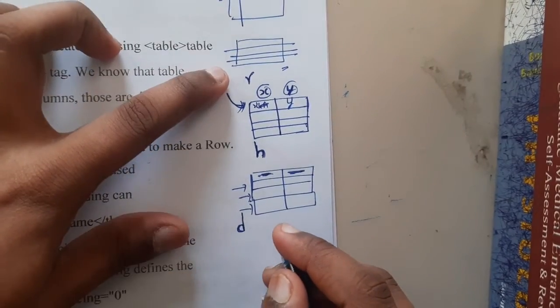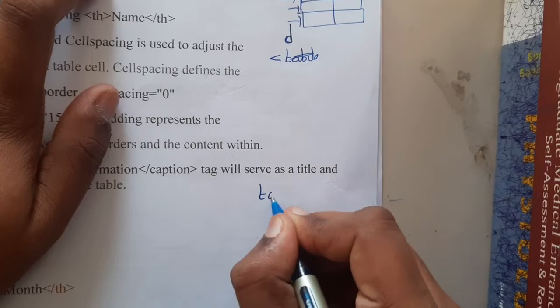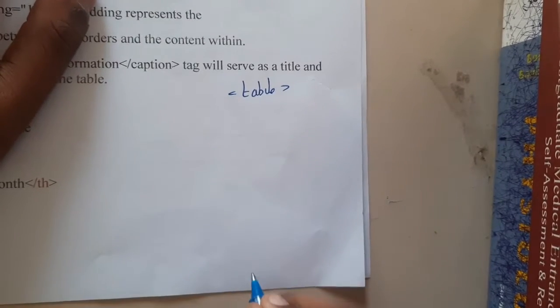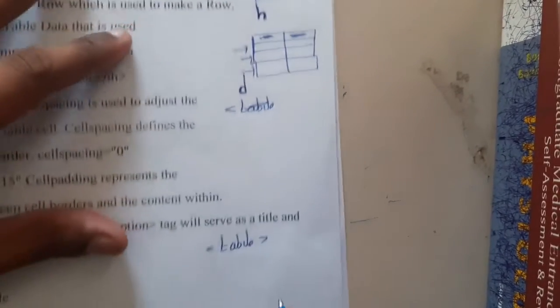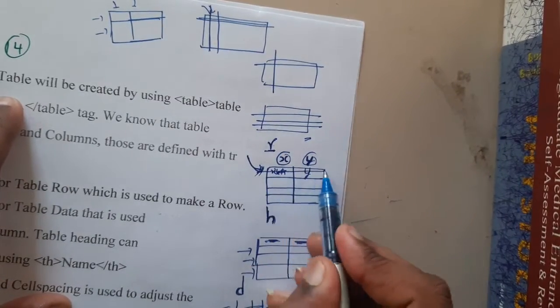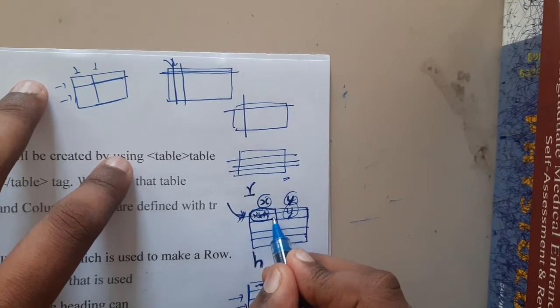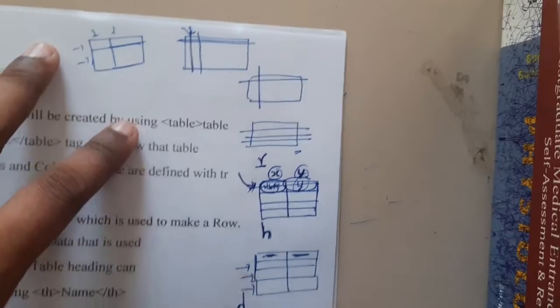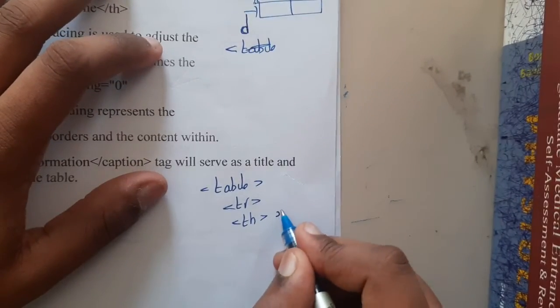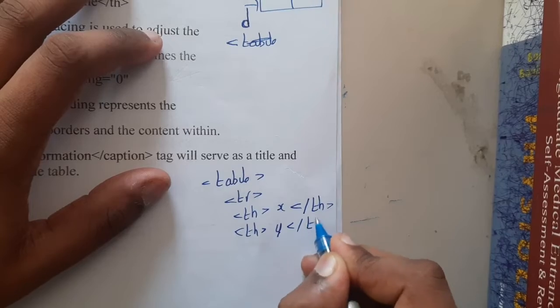So basically, first we need to create a table. Let me write it down: we open the table tag and after some steps we close the table. After that, we start a particular row. Inside the first row we might have headings. So I start the first heading — that is the first column — and then the second heading. According to my assumption we have two columns, so I keep the first heading as X and close it, then the second heading as Y and close it.